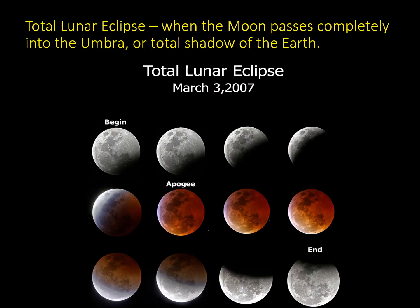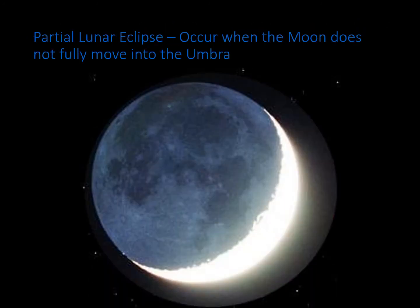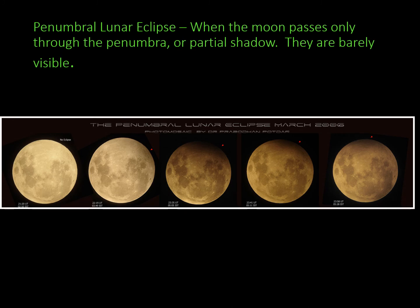This is how a total lunar eclipse looks — when the moon passes completely into the umbra or total shadow of the earth. This image was taken on March 3, 2007. A partial lunar eclipse occurs when the moon does not fully move into the umbra. A penumbral lunar eclipse is when the moon passes only through the penumbra and is barely visible. Always remember that lunar eclipses happen during nighttime.